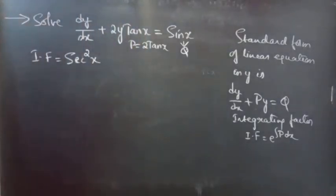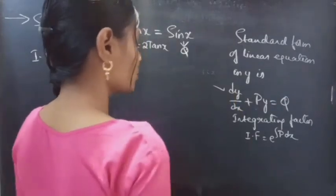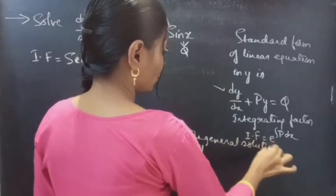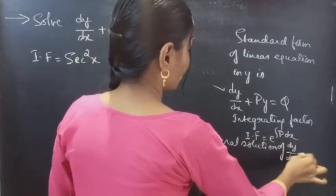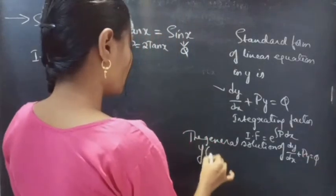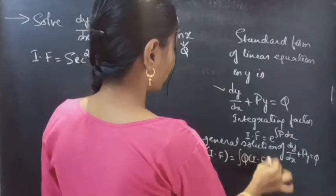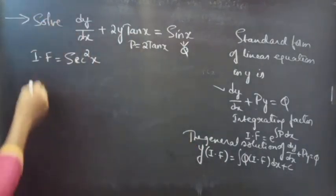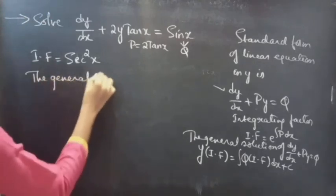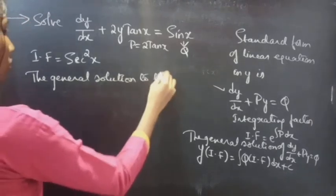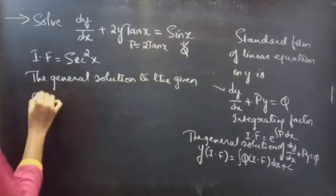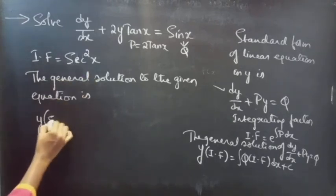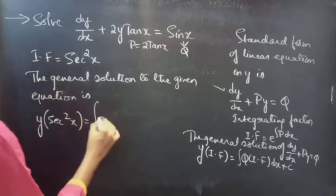Now we need to find the general solution to the given equation. We know that the general solution of the linear equation is given by y times the integrating factor equals integral of Q times the integrating factor dx plus C. Using this formula, y·sec²x equals integral of Q·sec²x dx plus C.